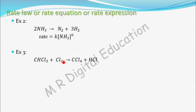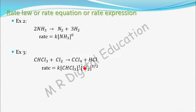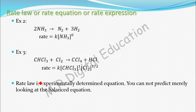Example 3: CHCl₃ + Cl₂ → CCl₄ + HCl. For this reaction, we can write the rate expression as: rate = K[CHCl₃]¹[Cl₂]^(1/2). The raised power for CHCl₃ is 1, which matches its stoichiometric coefficient. But the raised power for Cl₂ is one-half, while its stoichiometric coefficient is 1 — so they are different. One more important point: rate law will always be written with reactants only, not with products. Rate law is an experimentally determined equation — you cannot predict it merely by looking at the balanced equation.